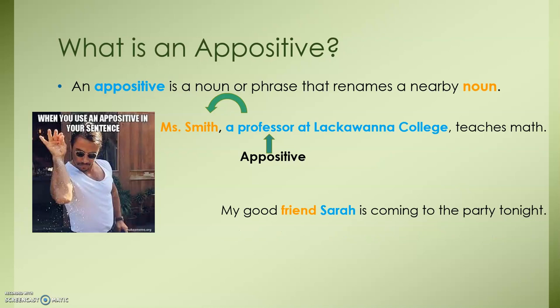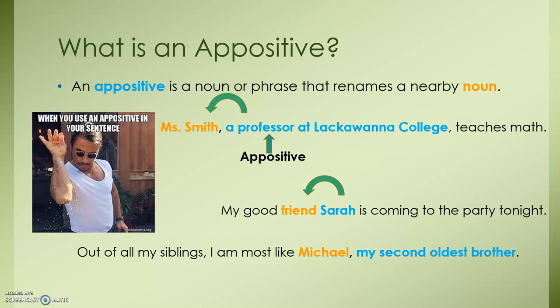Here's another example: My good friend, Sarah, is coming to the party tonight. Sarah is describing which friend you are speaking about. Out of all my siblings, I am most like Michael, my second oldest brother. Here we have the phrase 'my second oldest brother' describing Michael. You can see that these appositives are in three different spots in sentences, and one does not use a comma — so let's talk about that.